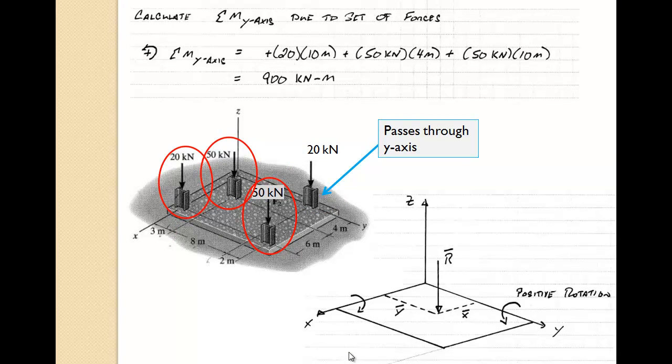Likewise, we can now calculate the moment about the y-axis. If you look at it, the forces that are applied are going to cause counterclockwise rotation. Or again, if you tip the thumb of your right hand and direct it along the positive y-axis, the curl of your fingers would be around the y-axis in the direction of rotation, so that's going to be positive.